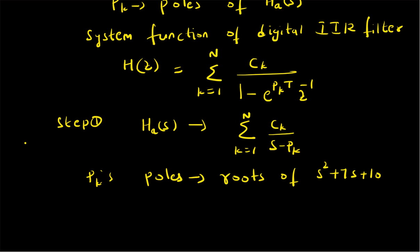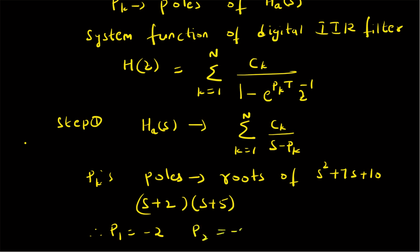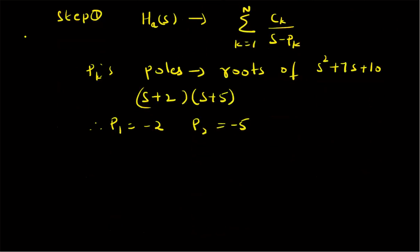The roots of s² + 7s + 10 are the poles of H_a(s). We can factor it as (s + 2)(s + 5), therefore p1 = -2 and p2 = -5. Now we can find the coefficients c_k using partial fractions.